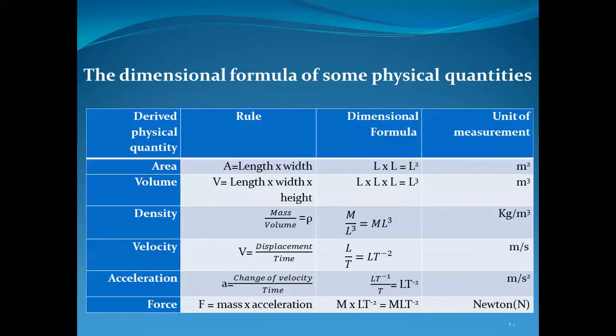Velocity equals displacement over time. The symbol of displacement is L (capital) and the symbol of time is T (capital). So velocity equals L over T. Moving T above changes the sign of its power, giving the dimensional formula of velocity as L·T to the power negative one. The unit of measurement is meter per second.